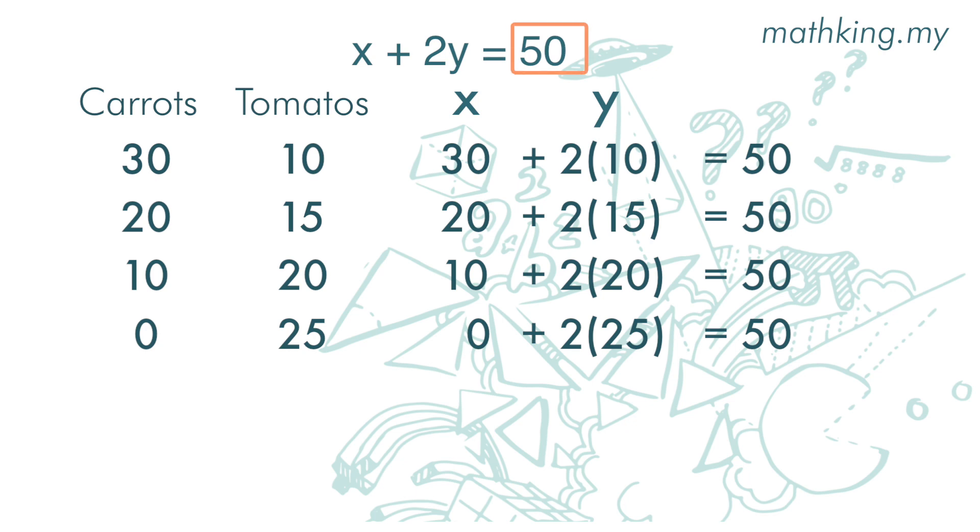We have 50 ringgits. If we buy 30 carrots, we can buy 10 tomatoes. If we buy 20 carrots, we can buy 15 tomatoes. If we buy 10 carrots, we can buy 20 tomatoes. If we don't buy any carrots, we can buy 25 tomatoes.